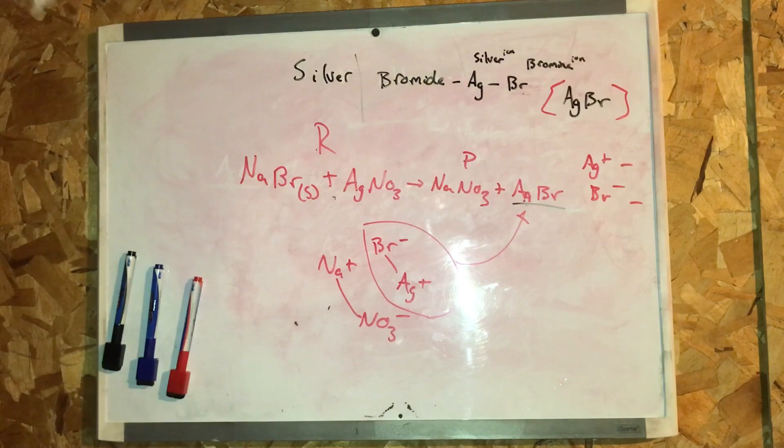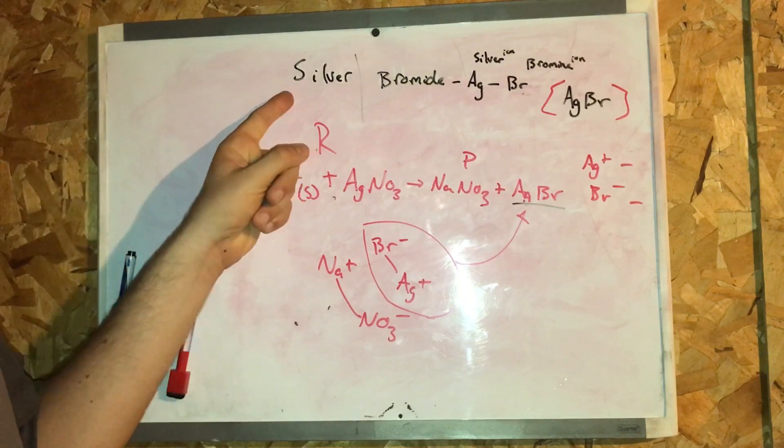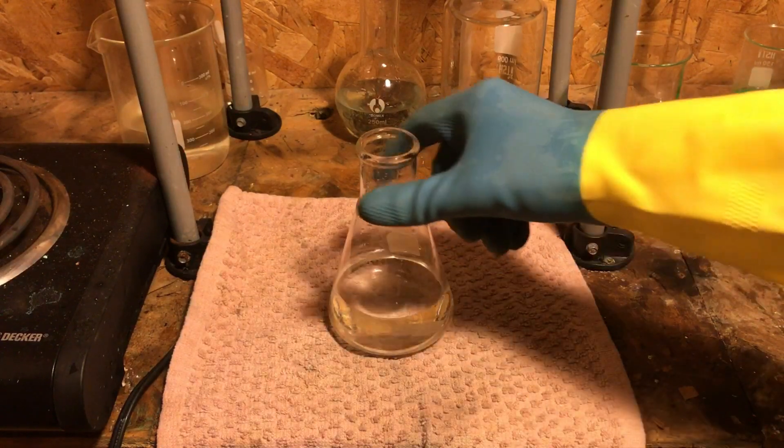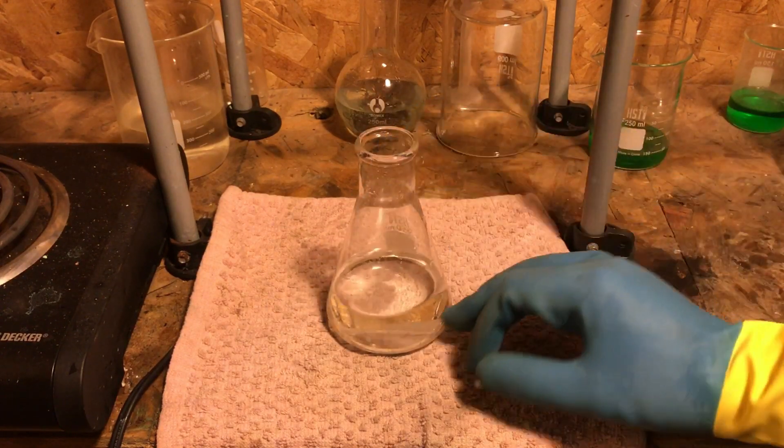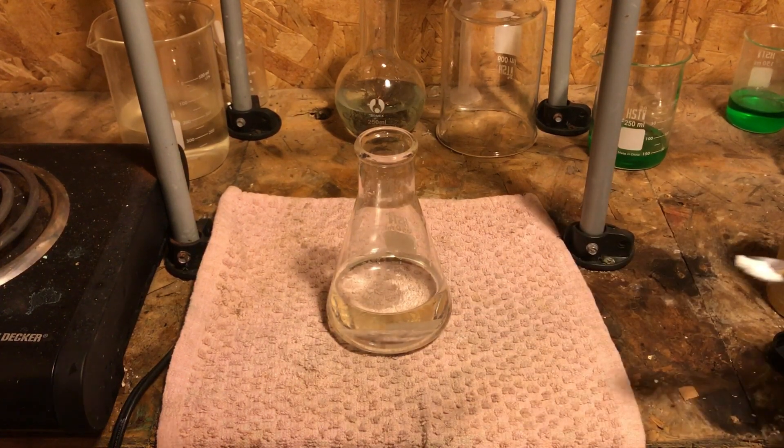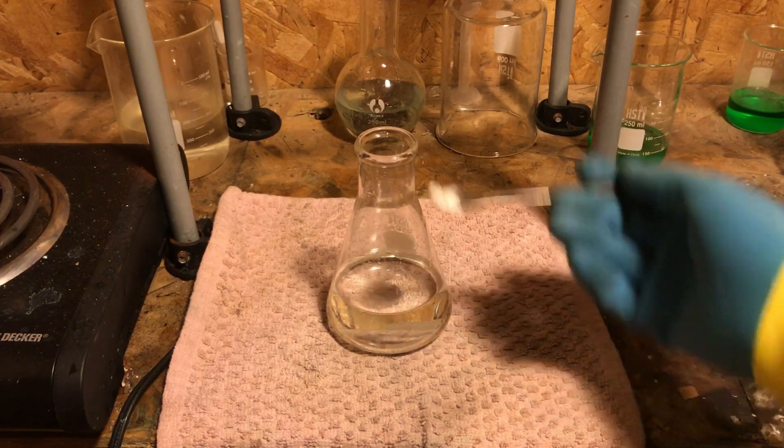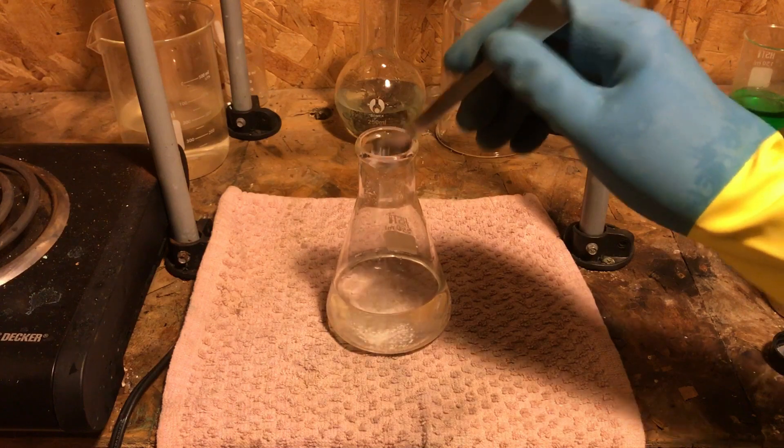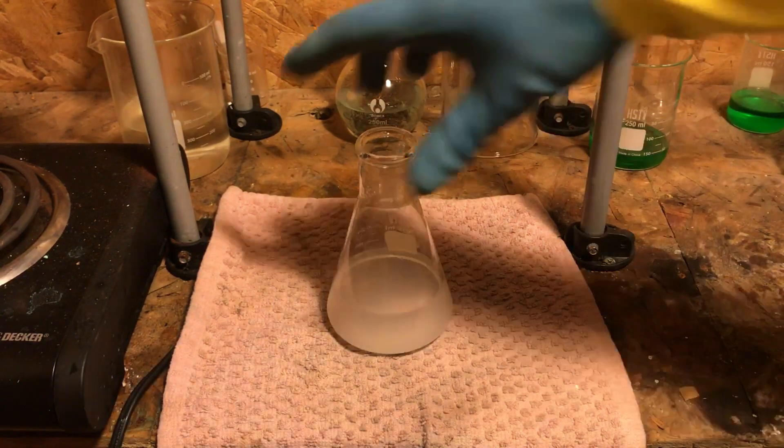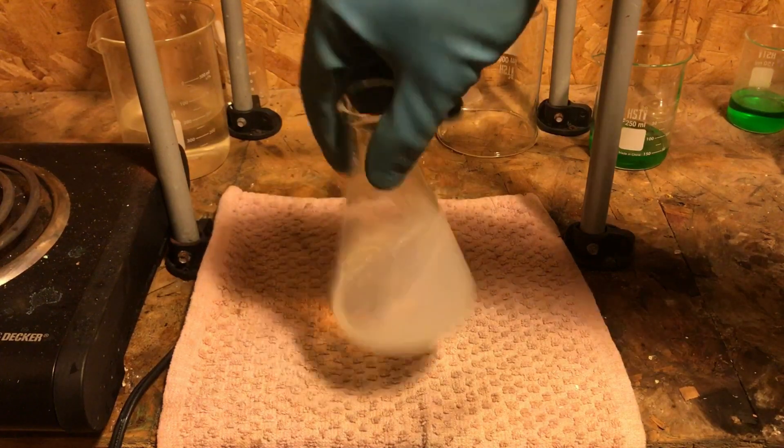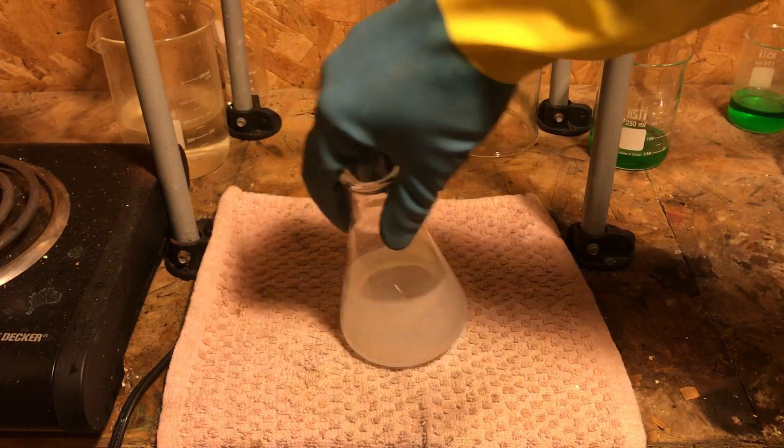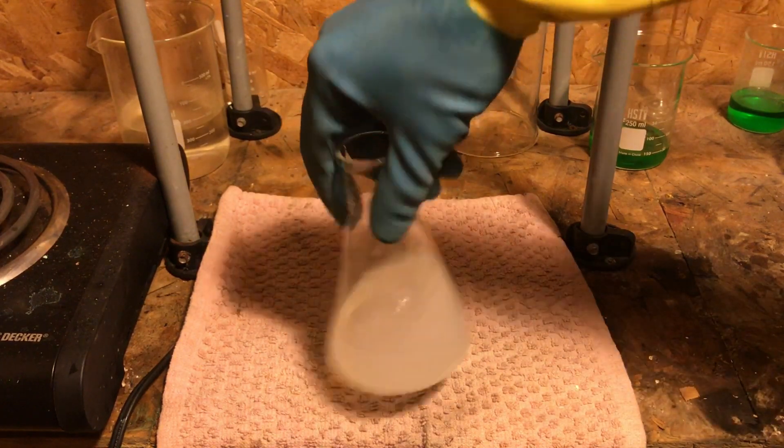Let's head to the laboratory and create silver bromide. To create silver bromide, let's first get a flask and fill it up with a hundred milliliters of water. I'm going to add silver nitrate to the water. This is going to create an aqueous solution of silver nitrate. I'm now going to swirl the flask around. This is going to help dissolve the silver nitrate into the water.